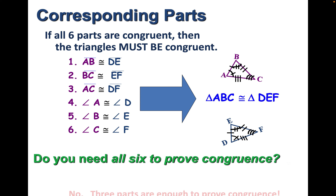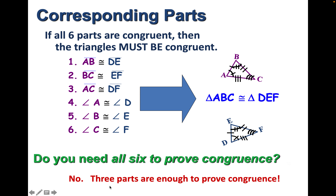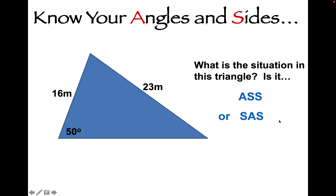The good news is no — just three parts. If you know just three parts are the same between two triangles, that is enough to prove the two triangles congruent. You don't have to prove all six. Before we look at proofs, let's look at one last detail: since we only need three parts, we need to know how to label those three parts correctly.